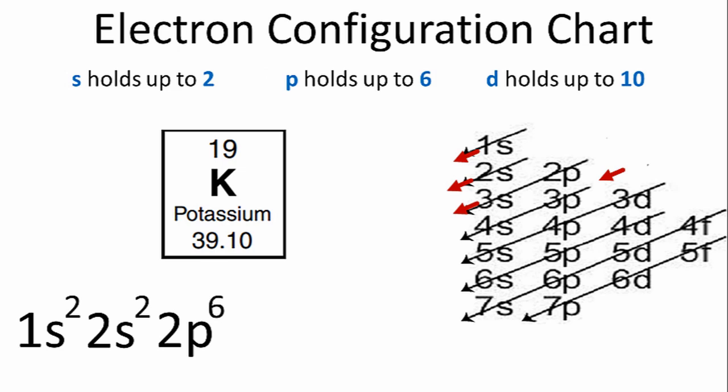We've used a total of 10 electrons so far. We have 19 for potassium. Also in the third row, we have the 3s. We'll put 2 there, and then we'll go to the next row. In the fourth row, we have 3p. We'll put 6 electrons in the 3p.